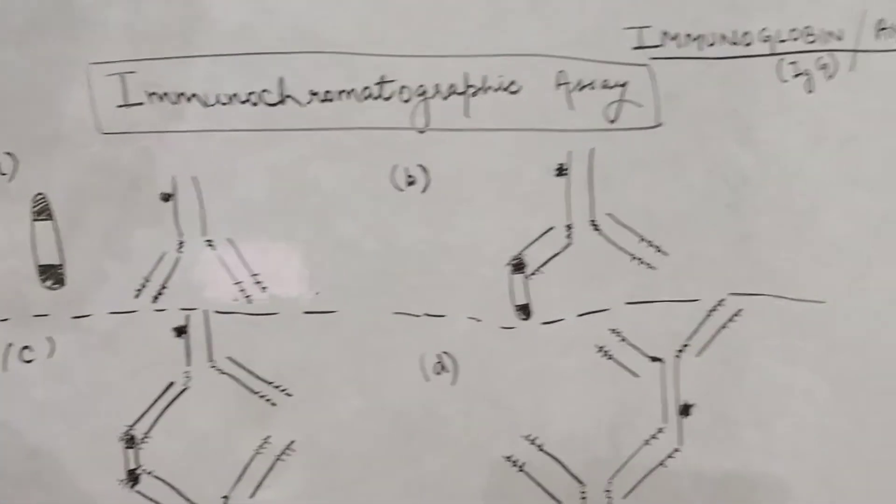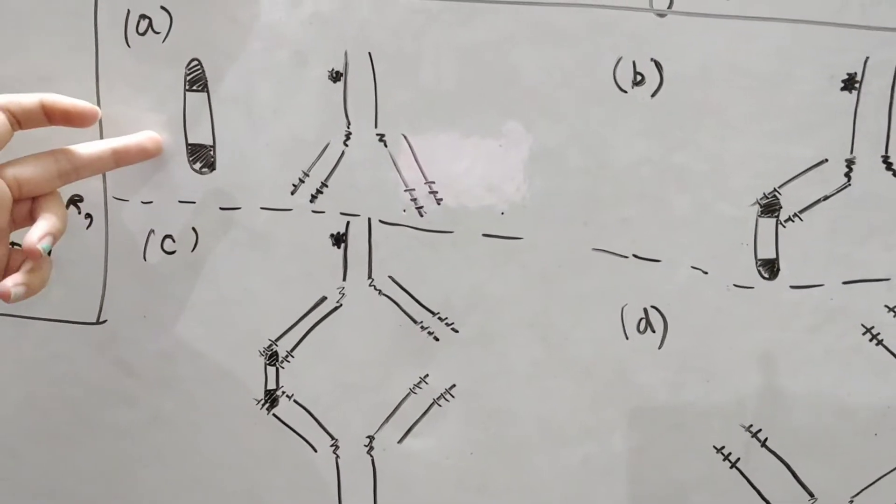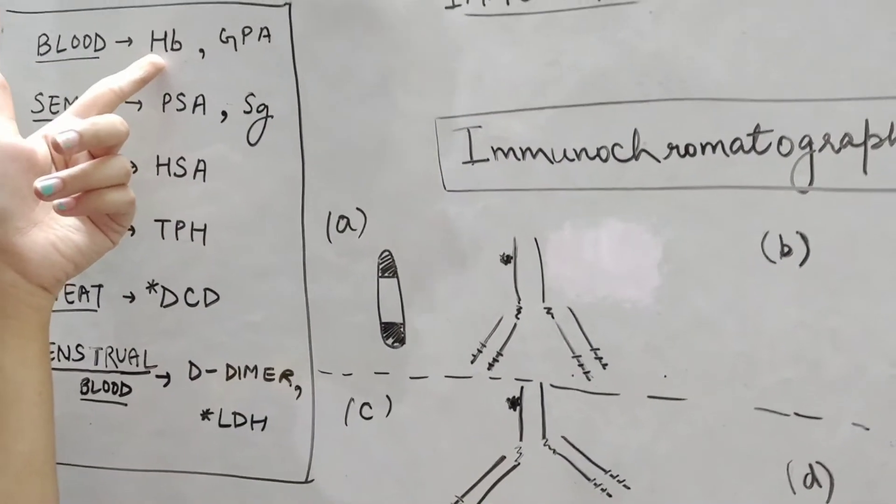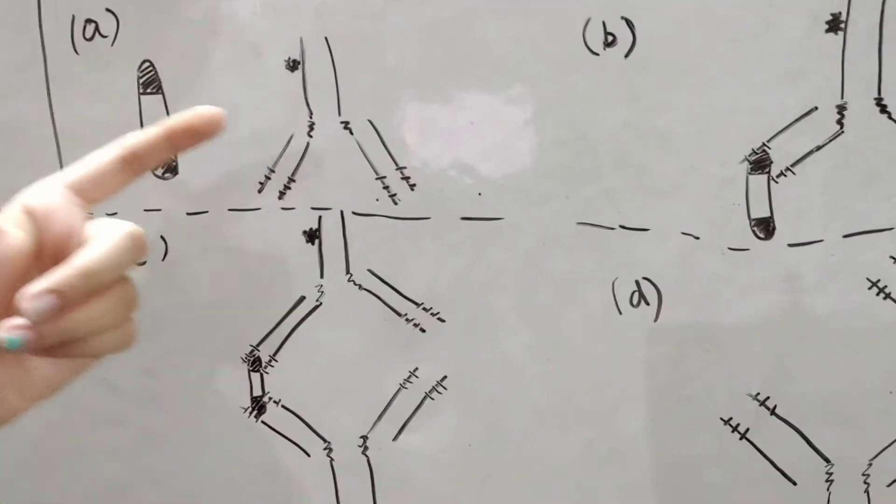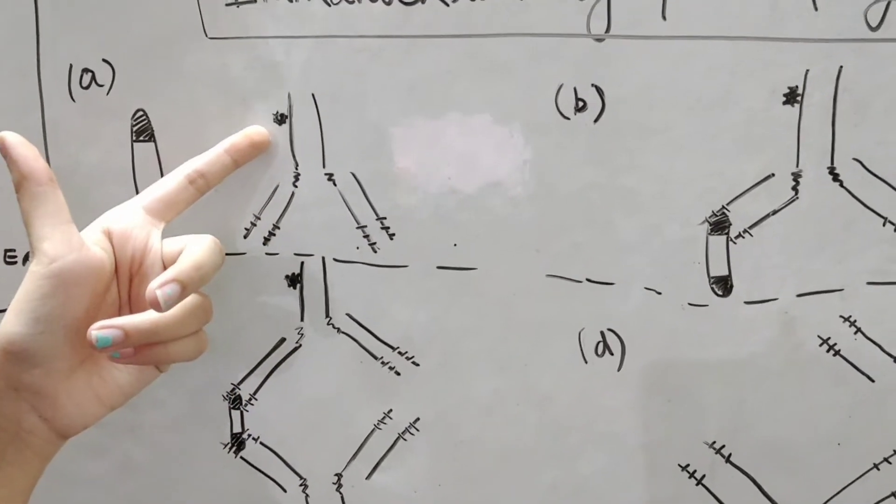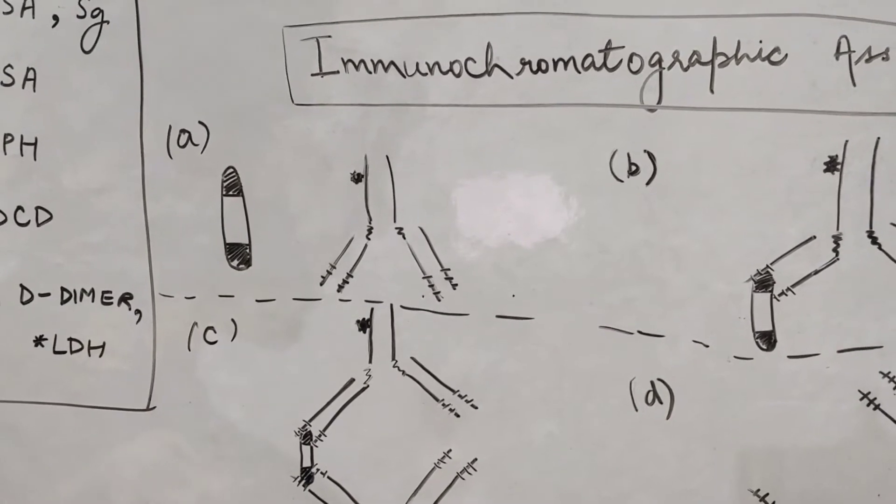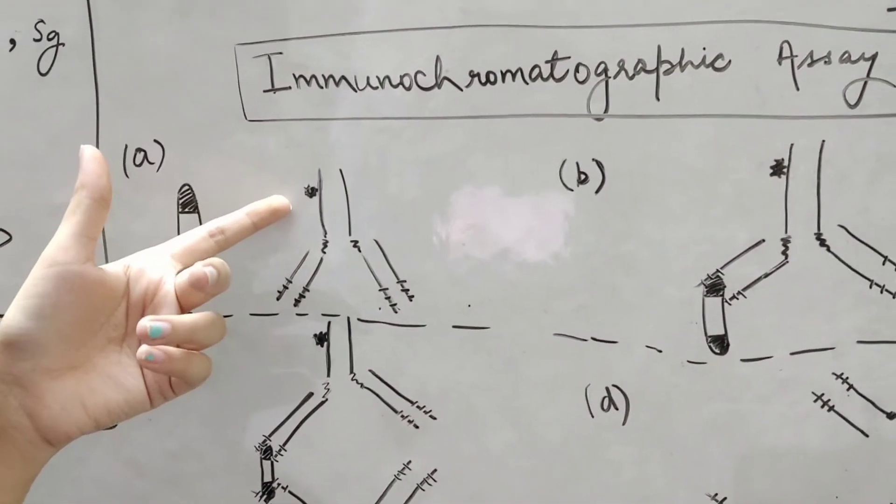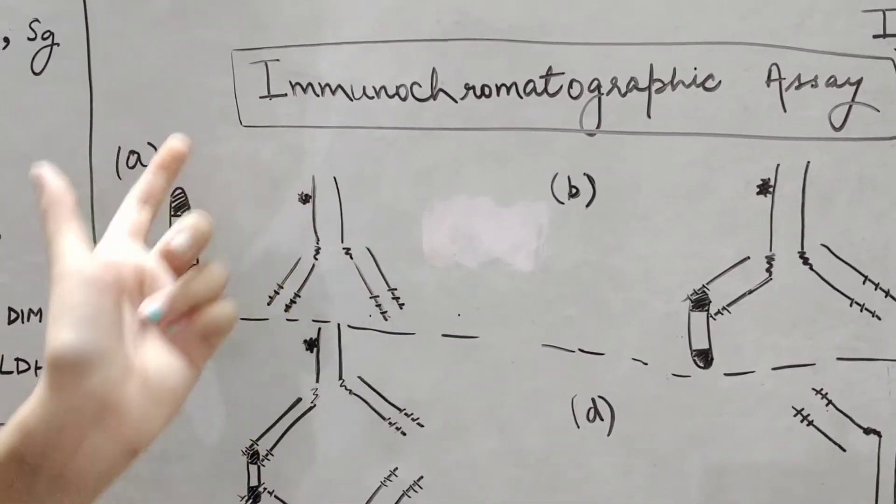So, talking about immunochromatographic assay, these are basically in four steps. The first step is, these are the epitopes of the antigen. This antigen can be any antigen as written here. We will talk about HB antigen. So, for example, consider this antigen as HB. And this is any labelled antibody. Labelling can be colorimetric labelling, labelling can be radioactive, labelling can be fluorometric. This is a labelled antiglobulin, labelled antibody.